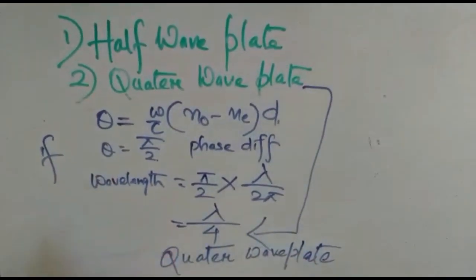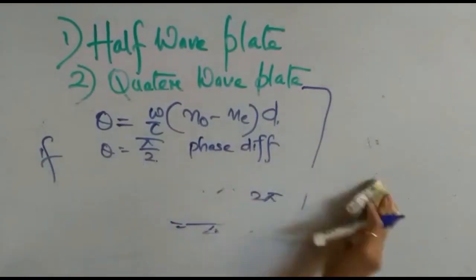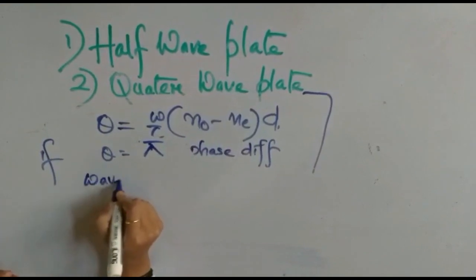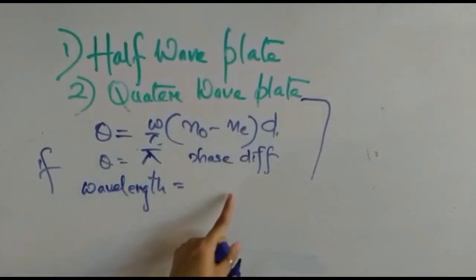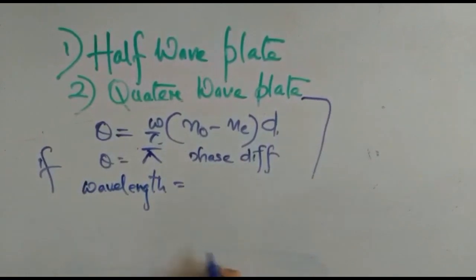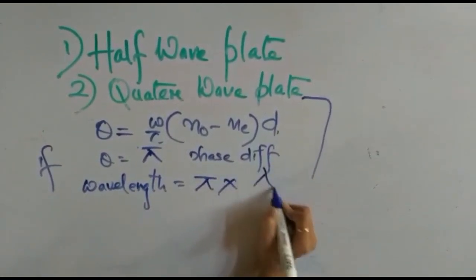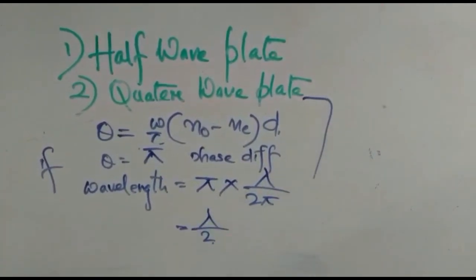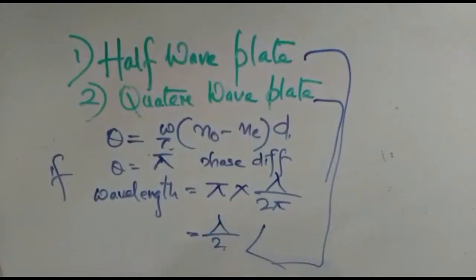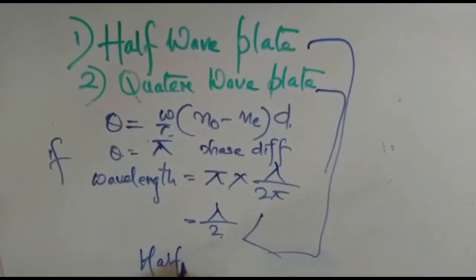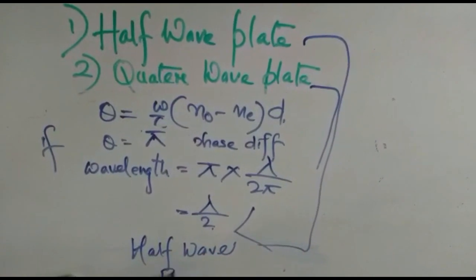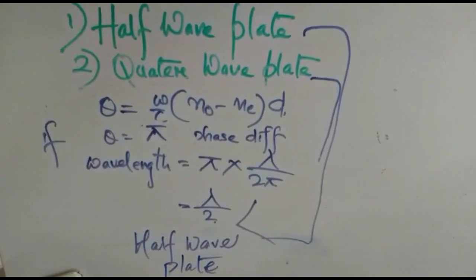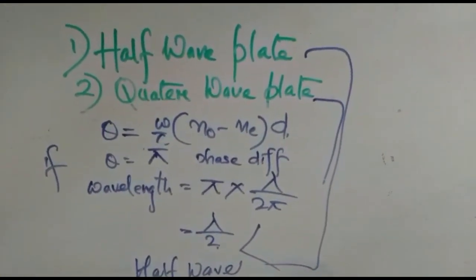When the phase difference θ = π, using the same relationship between wavelength and phase difference, the path difference becomes λ/2. So when the path difference is λ/2, the crystal is called a half wave plate. This is all about the half wave plate, quarter wave plate, and double refraction.